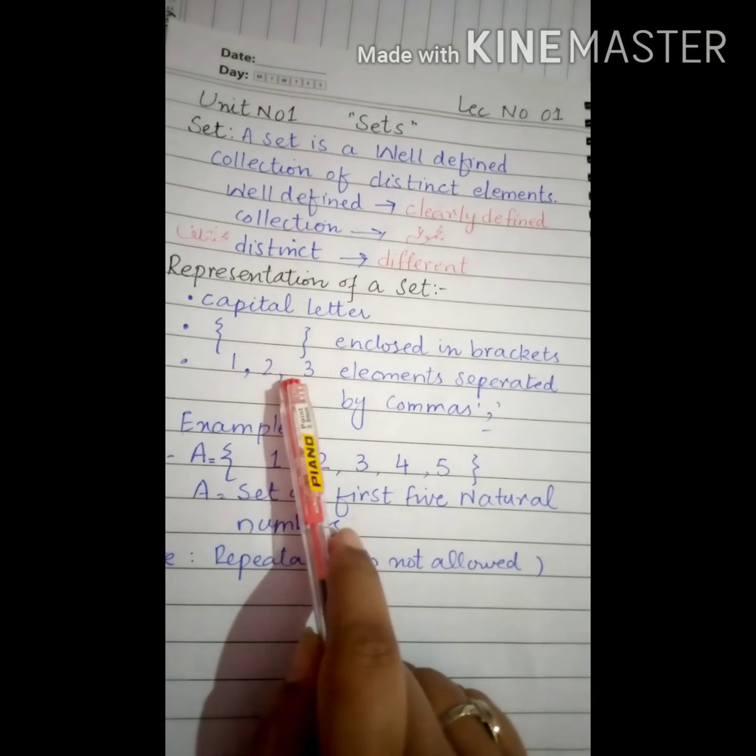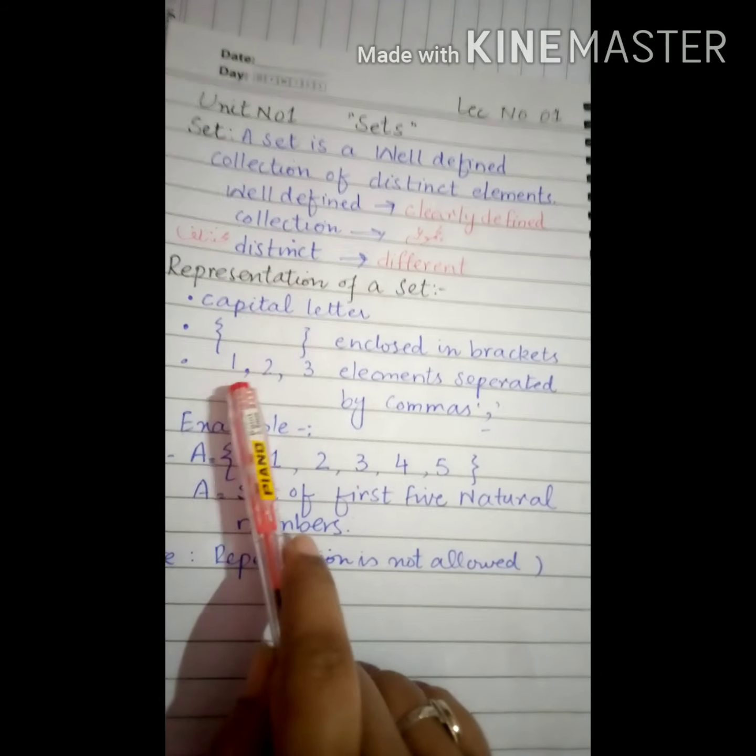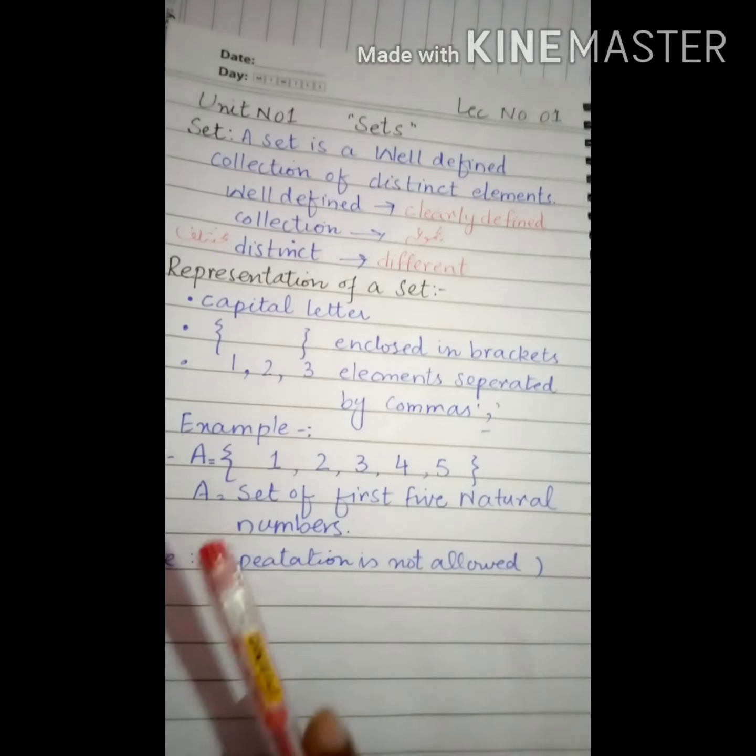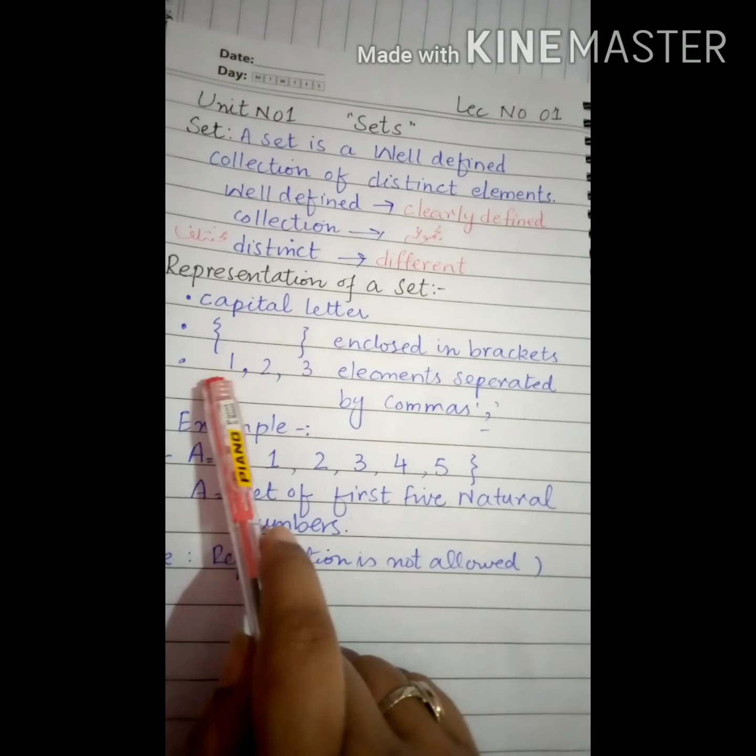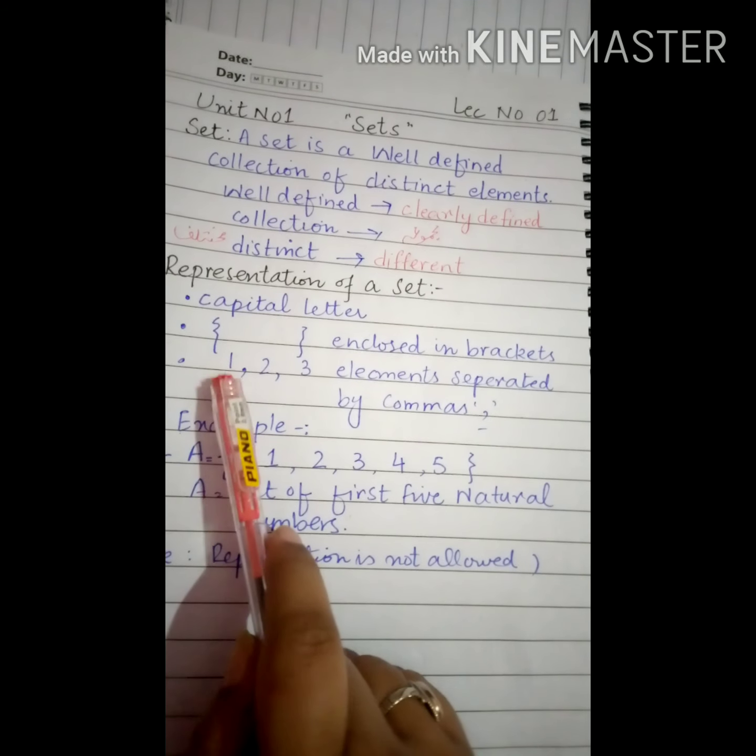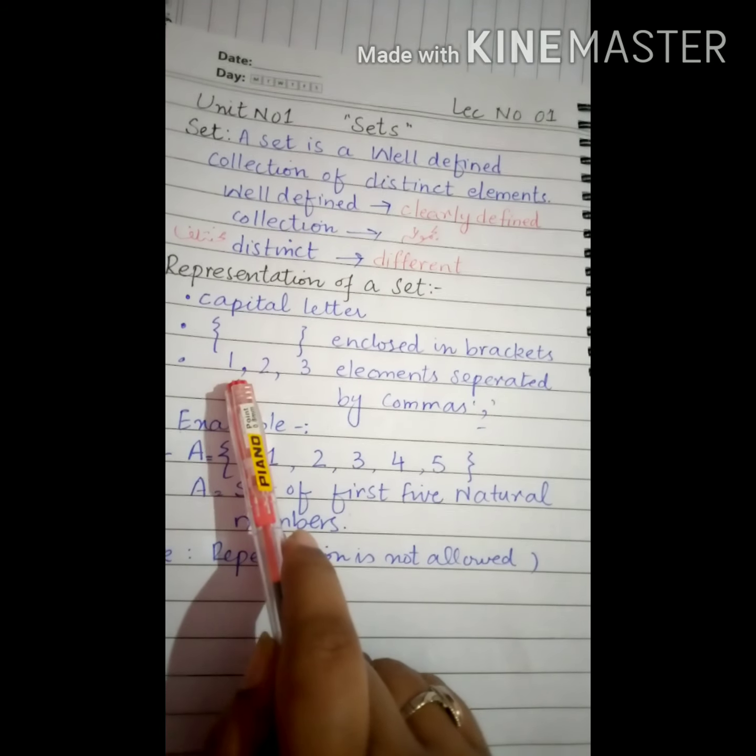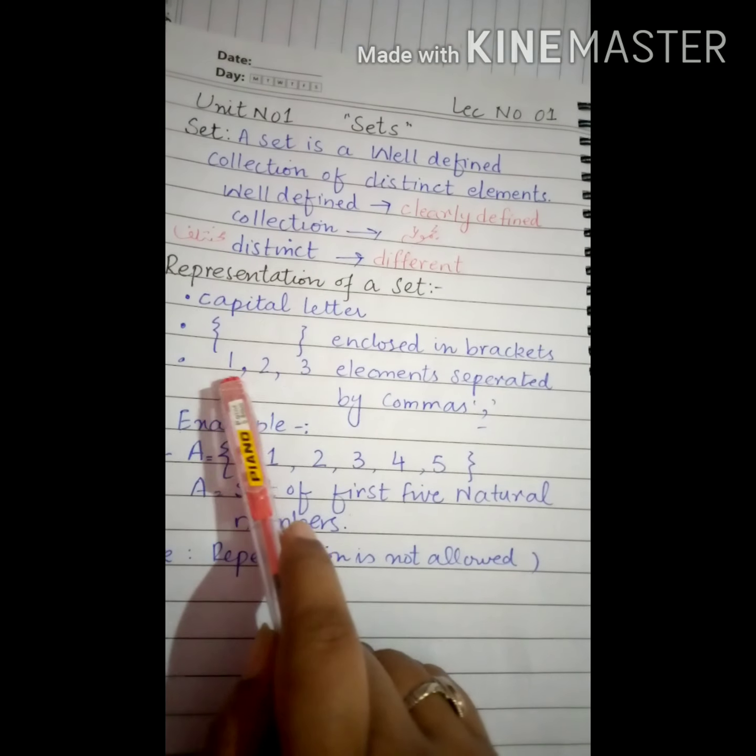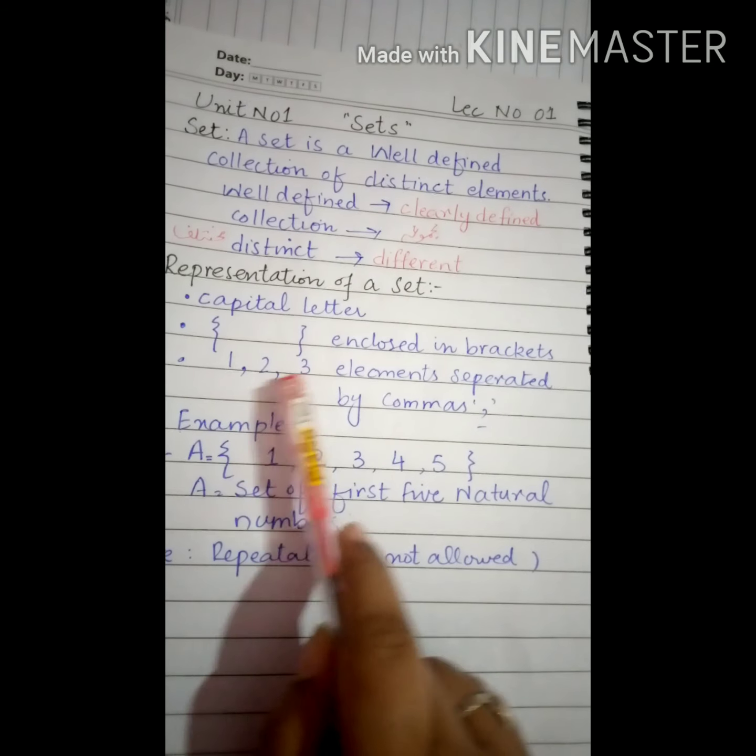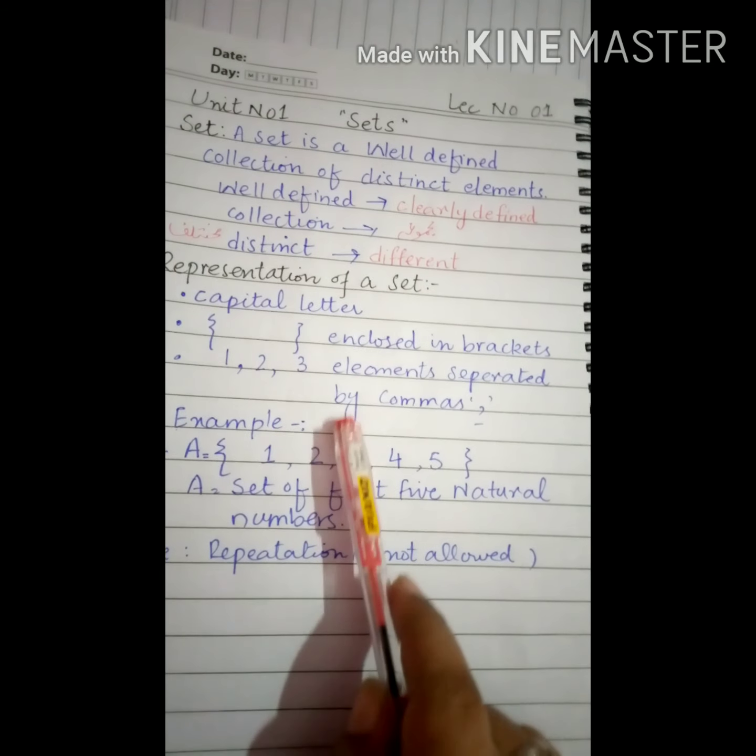Third thing, elements of a set are always separated with commas. ہمیشہ commas کے ساتھ elements کو separate کیا جاتا ہے. Elements are whatever we have inside the set - words, alphabets, 1, 2, 3, numeric - whatever data we have, we always separate alphabets and numerics with commas. Like 1, 2, 3 and so on and so forth.